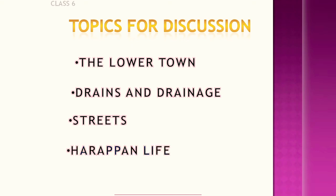Now let us talk about Harappan life. The conditions prevailing on the banks of the River Indus and its tributaries were favorable for settlement. There was no problem with water supply, everything was available, and the drainage system was perfect. There was fertile soil for growing good crops, good moisture, and favorable weather.